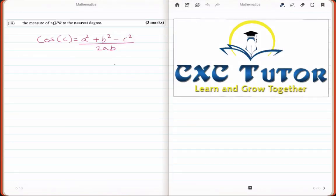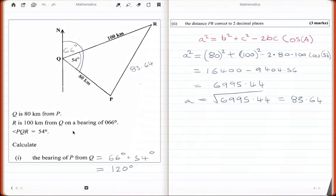Now the last part asks us to calculate the measurement of the angle QPR to the nearest degree. So again, we're going to use the cosine rule, but we're going to use the version that helps us to solve for the angle. So we are looking for this angle in between here.